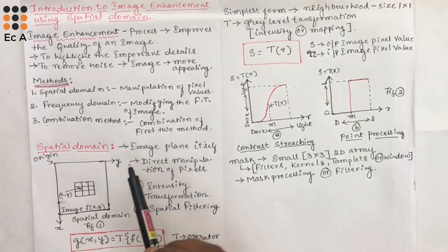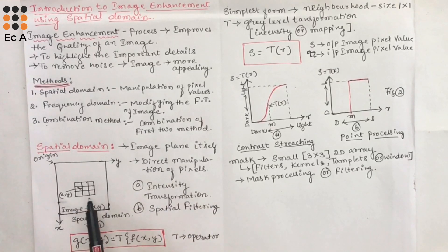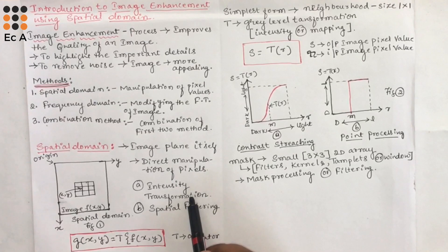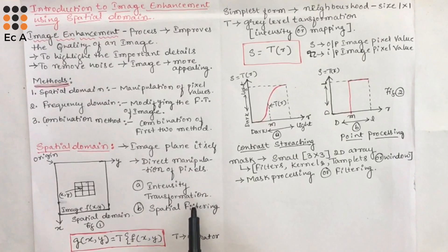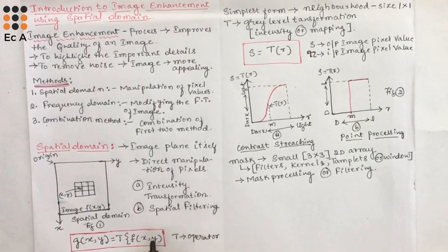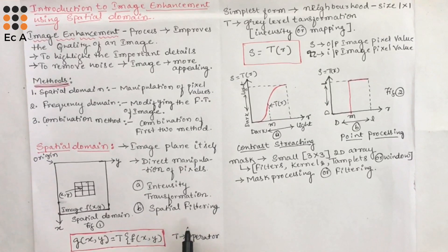Image processing in this domain is direct manipulation of pixel values of an image. There are two categories of spatial domain. The first one is intensity transformation, in which modification of intensity values of pixels takes place. The second one is spatial filtering, where there will be direct manipulation of pixels using a mask.